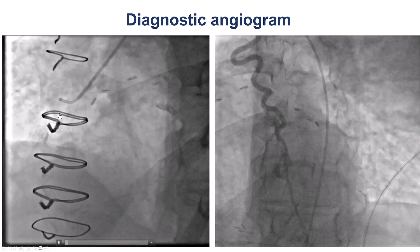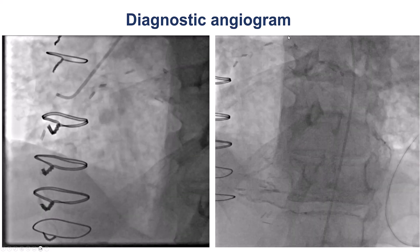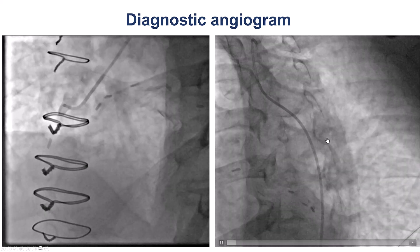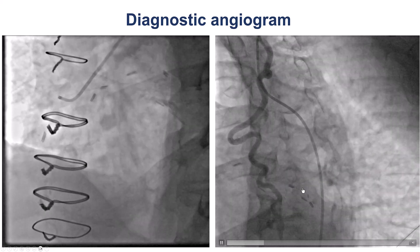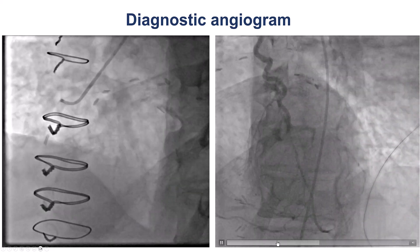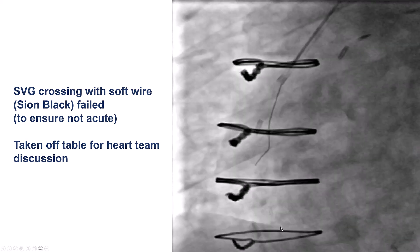There was an occluded vein graft going to the right, but there was a patent LIMA going to the LAD, which was in turn providing collaterals going to the posterior descending artery.